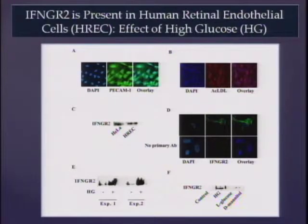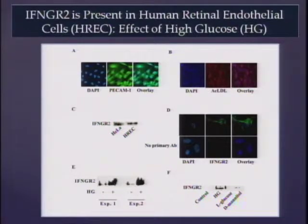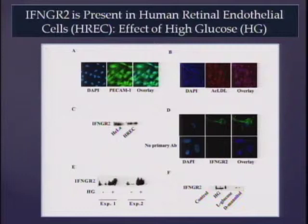Switching over to the cells — HREC are the human retinal endothelial cells. Don helped with isolation and culture of these cells. We characterized them using PCAM-1 antibody showing they are endothelial cells, DAPI for nuclei, and acetyl LDL uptake for the scavenger receptor — both positive for endothelial cells. The Western blot for interferon gamma receptor 2 shows HREC express it, confirmed by immunofluorescence.